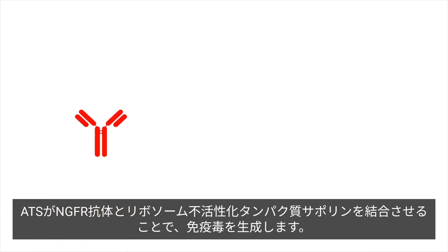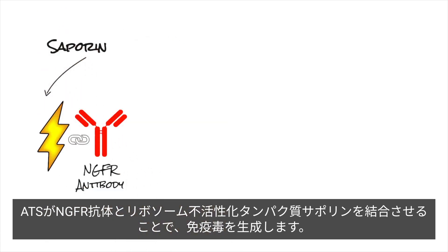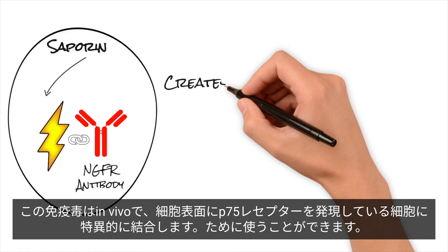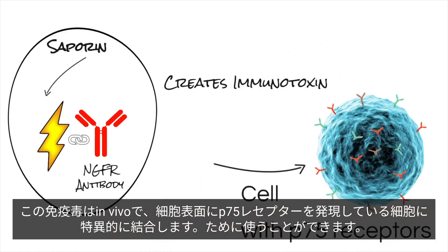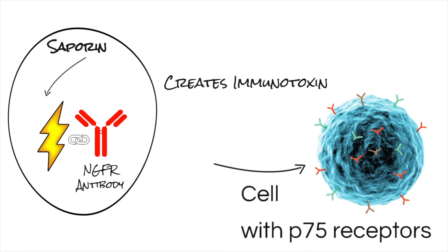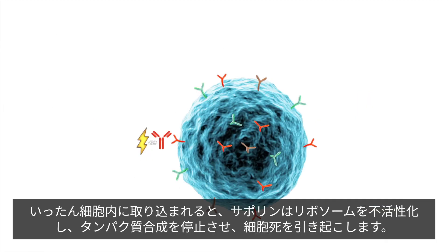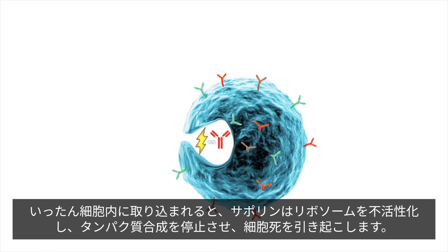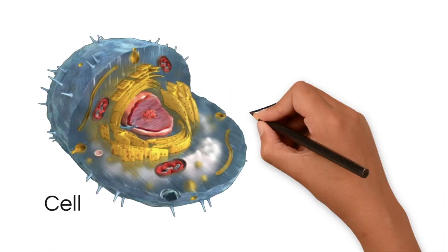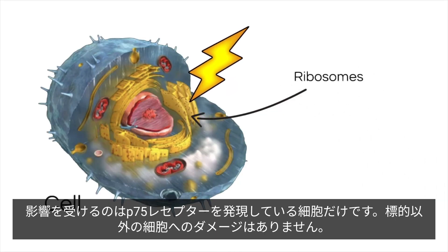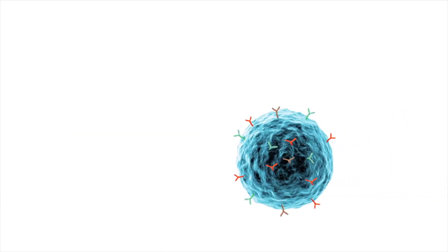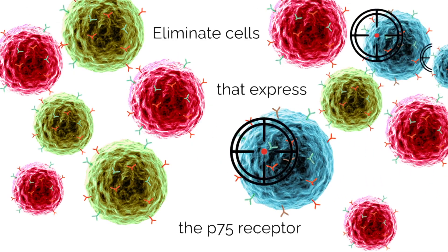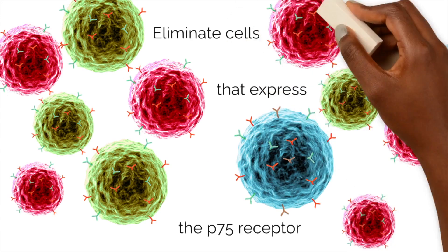When ATS conjugates an NGFR antibody to a ribosome-inactivating protein, saporin, an immunotoxin is created. This immunotoxin can be used in vivo to specifically bind to cells that express the P75 receptor on the cell surface. Once internalized, saporin inactivates the ribosomes, which shuts down protein synthesis and causes cell death. Only cells that express the P75 receptor will be affected. There is no off-target cell damage.